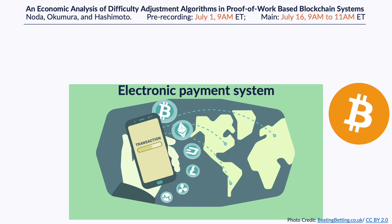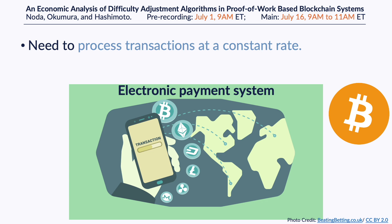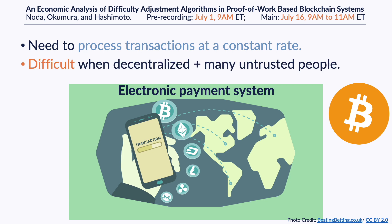Cryptocurrency system is an electronic payment system, and so it needs to process transactions at a constant rate. However, unlike the traditional payment system, this goal is hard to achieve when the system is decentralized and managed by many untrusted people, as in blockchain systems.